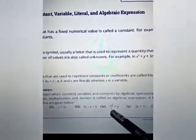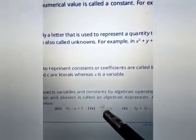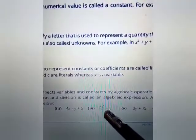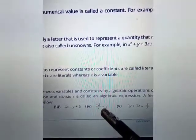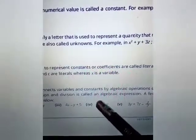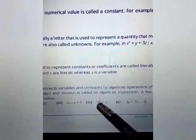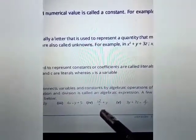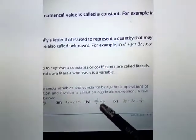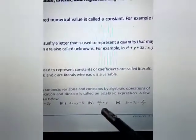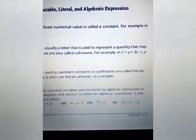Another example of an algebraic expression: here x is a variable, y is a variable, plus is the algebraic operation, and negative 2 is the constant. So this is the combination of variable, algebraic operation, and constant — and therefore this is also an algebraic expression.